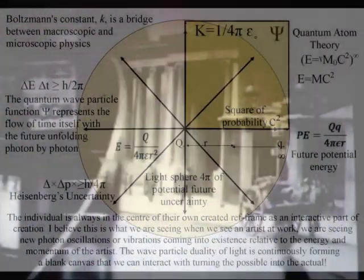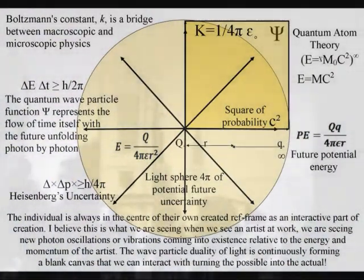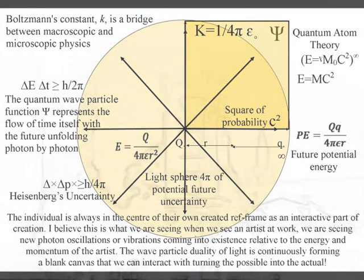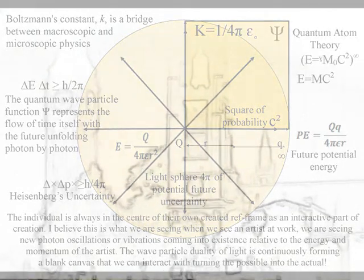If our eyes worked at a different wavelength, we would be able to see that everything is radiating light waves of electromagnetic radiation continuously. Objects interact with the particle wave duality of light, continuously forming new electromagnetic waves.